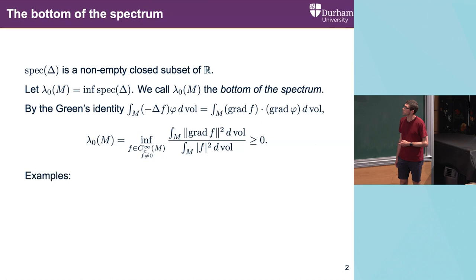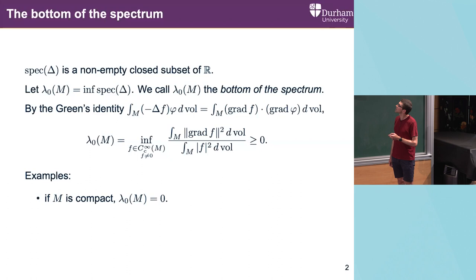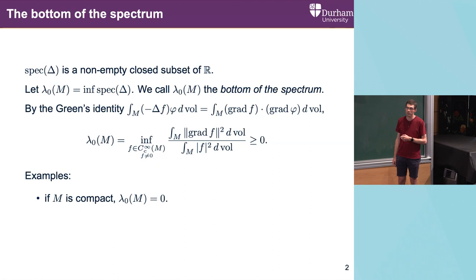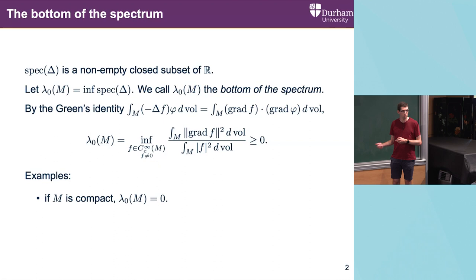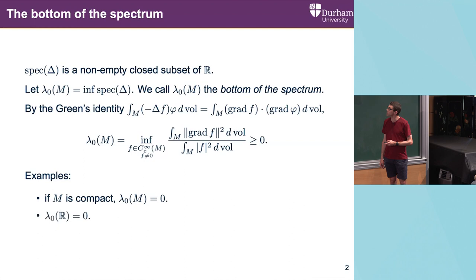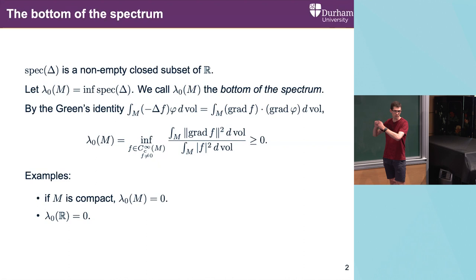Some basic examples: if M is compact, then the constant function is a compactly supported smooth function on M, and when you stick the constant function into the Rayleigh quotient, you get zero. With a bit more work, this also holds for finite volume M. Also, it's not too difficult to see that lambda zero of R is zero — you take longer and longer approximations of the constant function on R.